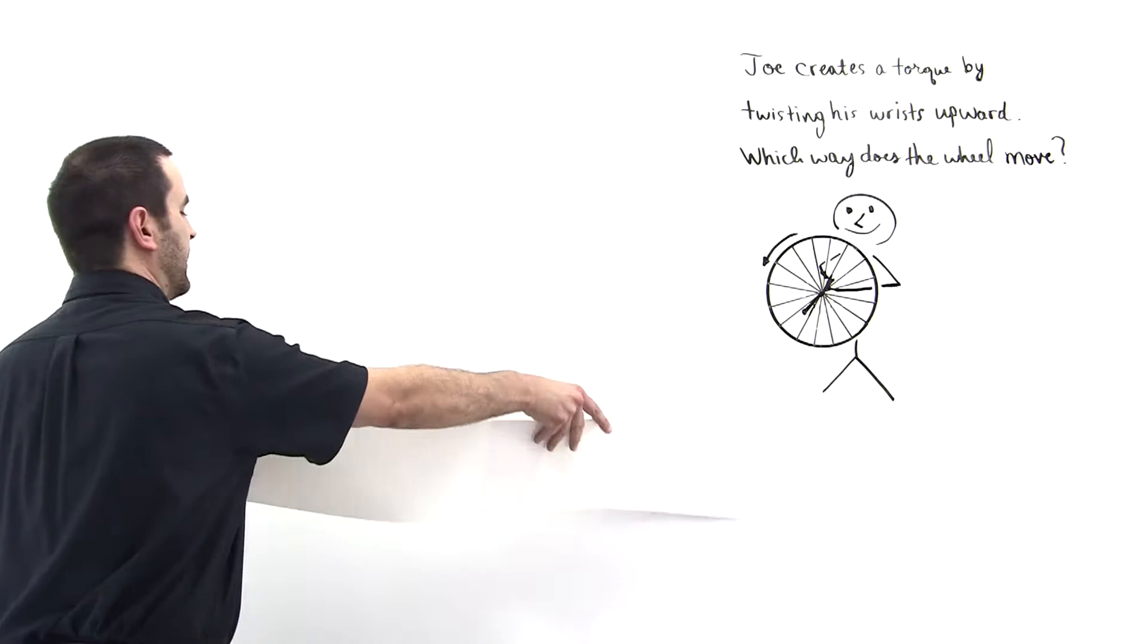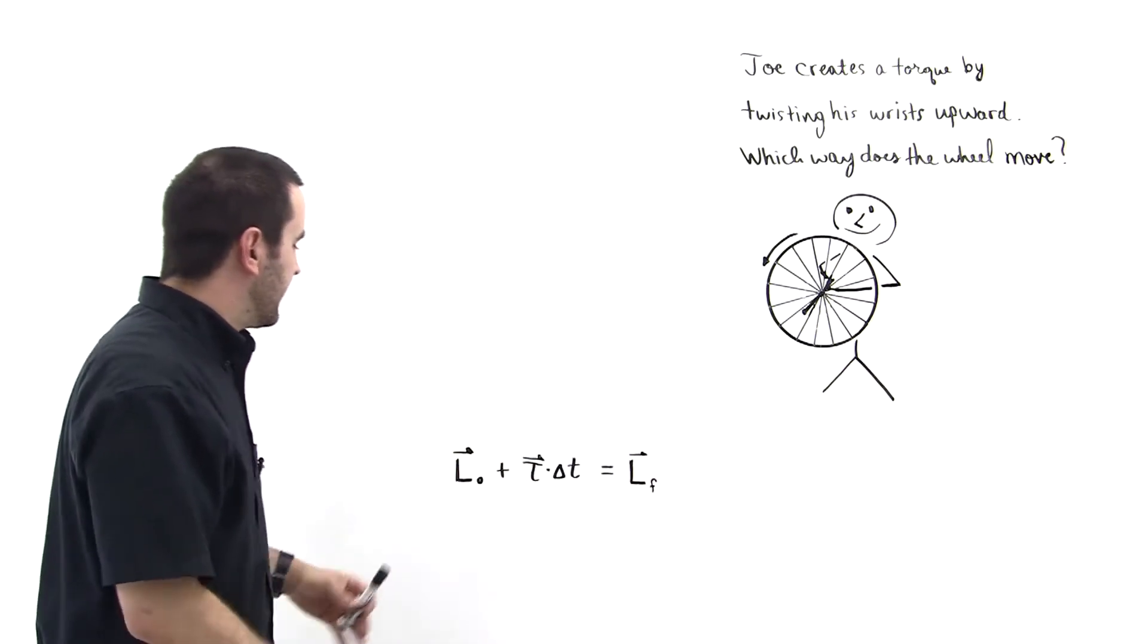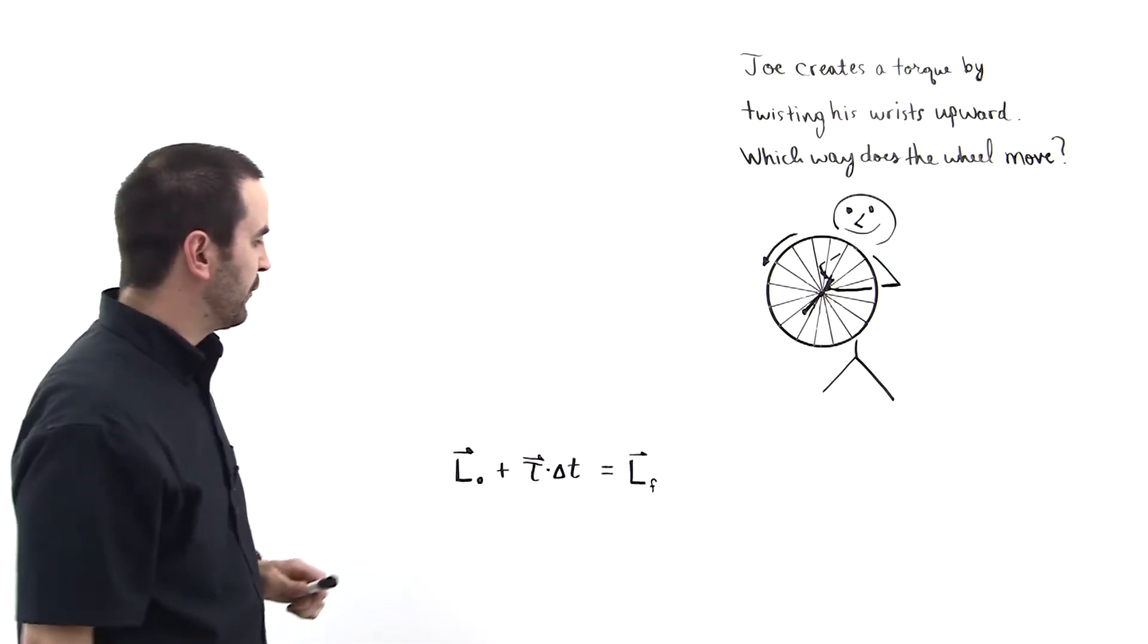So let's first consider the equation for angular momentum and torque impulse. The initial angular momentum plus the torque impulse is equal to the final angular momentum for the wheel.